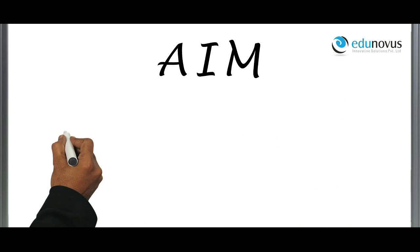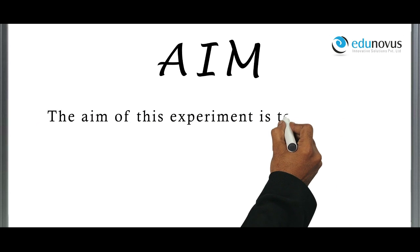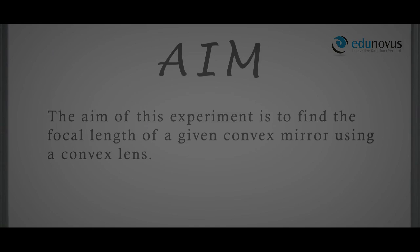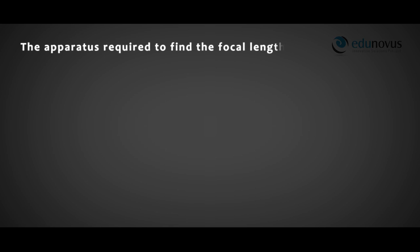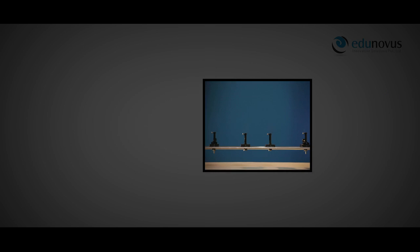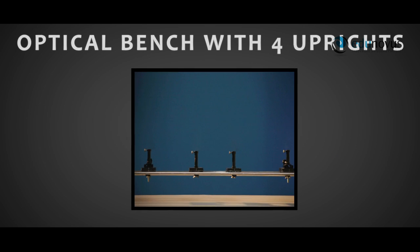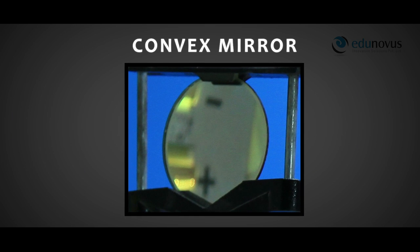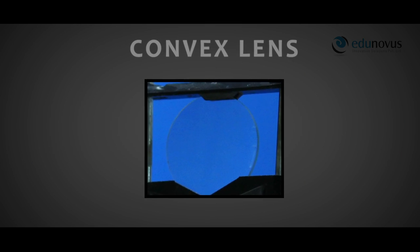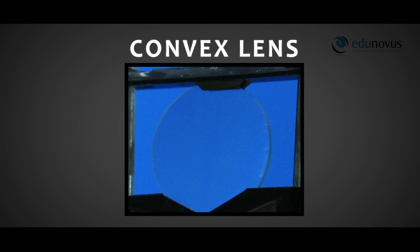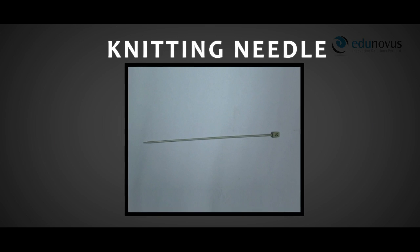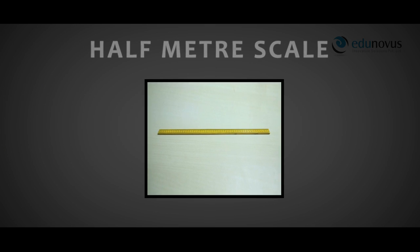The aim of this experiment is to find the focal length of a given convex mirror using a convex lens. The apparatus required are: an optical bench with four uprights, a convex mirror, a convex lens, a knitting needle, and a half meter scale.